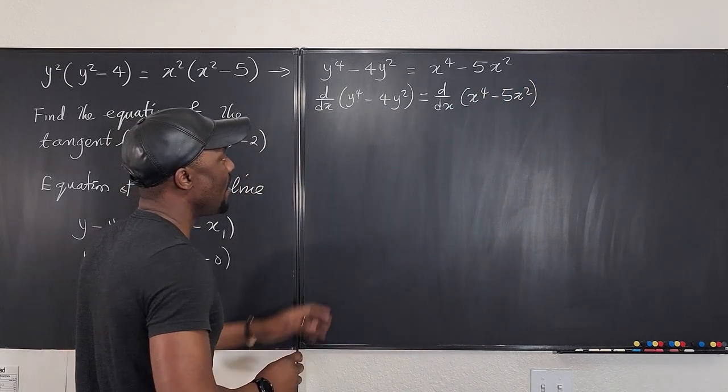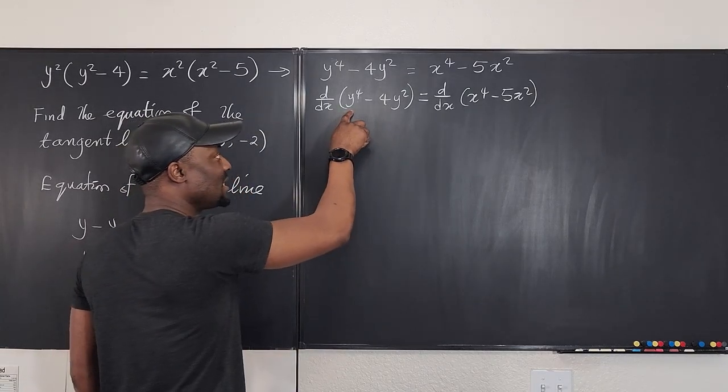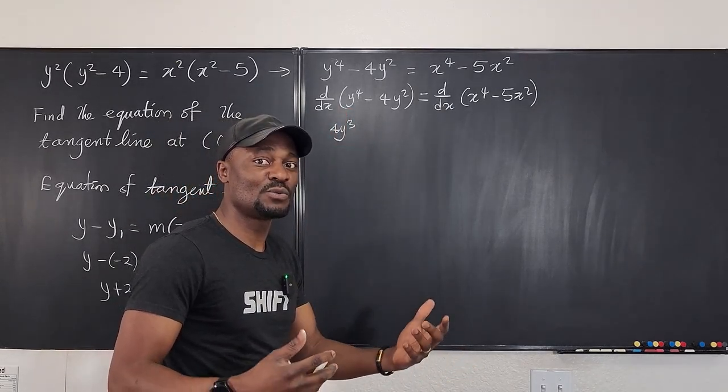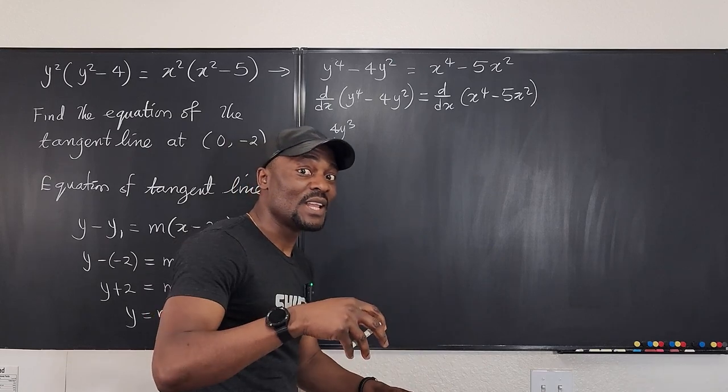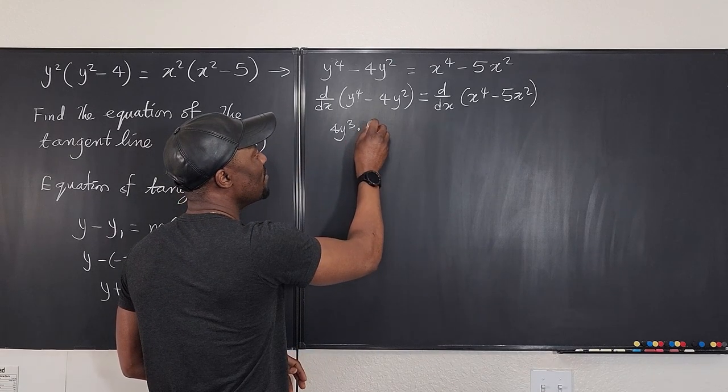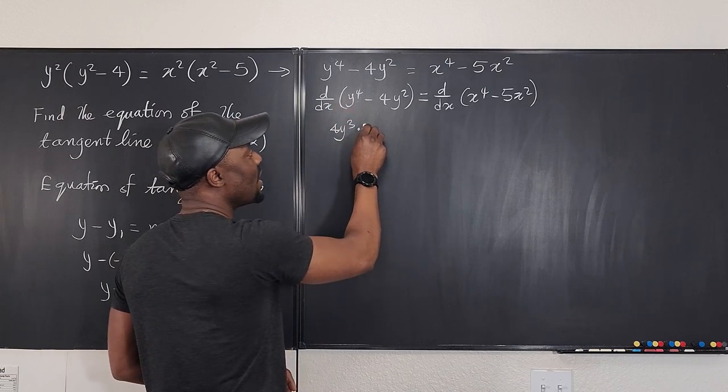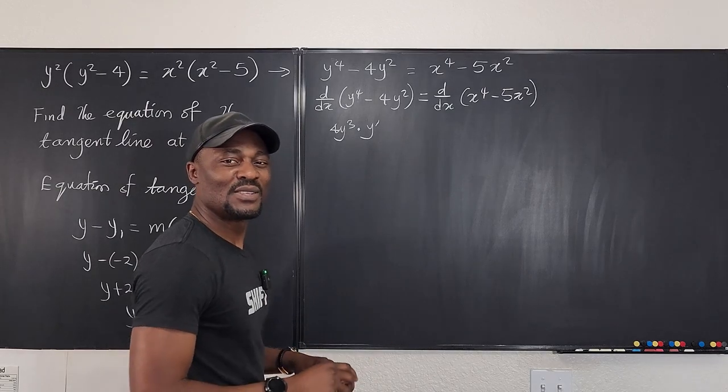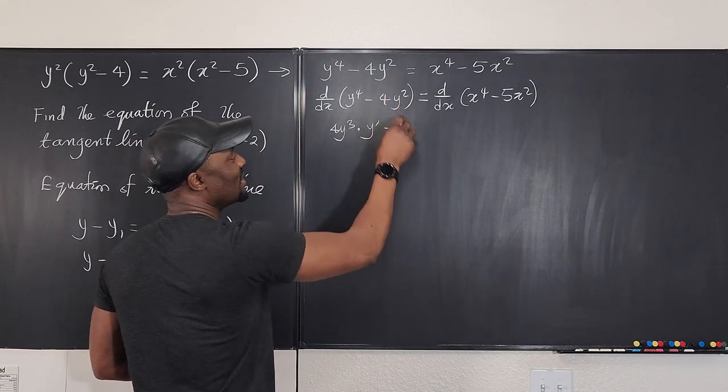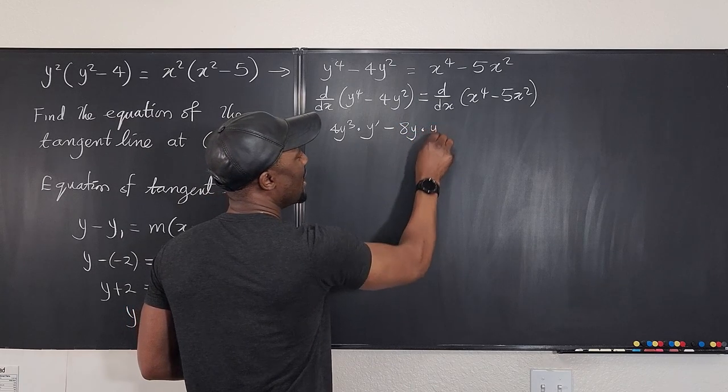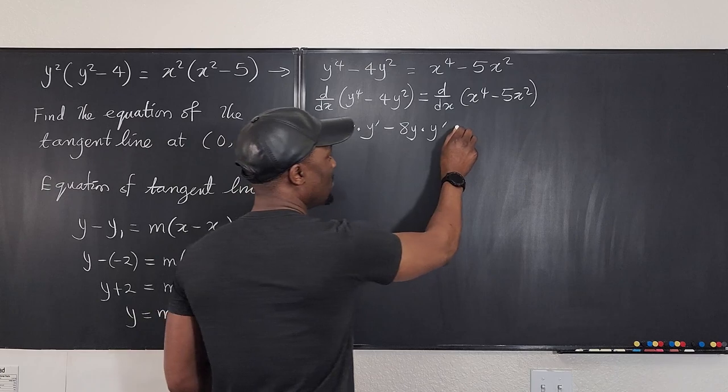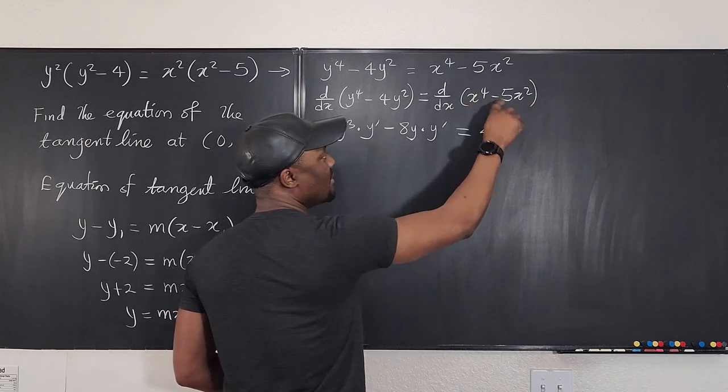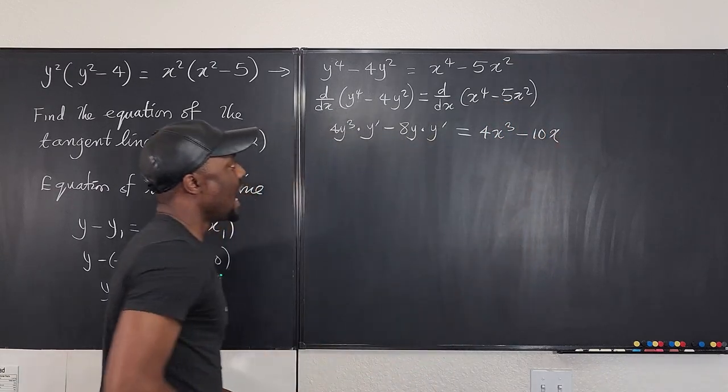Okay so now if we take the derivative of each of these terms implicitly this is going to be 4 y cubed so you're going to differentiate this as if you were differentiating with respect to y but you're differentiating with respect to x so you're going to multiply by the derivative of y which I'm going to write as y prime. You can write it as dy dx but y prime looks smooth here. Okay minus if you take the derivative of this you're going to get 8y times y prime. Okay we go to the right hand side the derivative of x to the fourth is 4 x cubed and the derivative of this is minus 10 x and we're good.